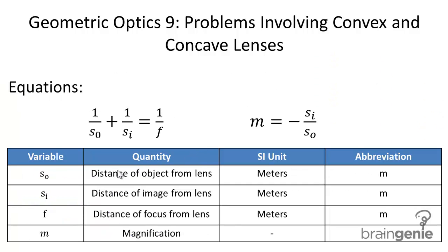Two important equations which are essentially the same equations as the equations for convex and concave mirrors. It's 1 over SO, SO being the distance of the object from the lens, and SI, the distance of an image from the lens, equals 1 over F, and that's the distance of the focus from the lens or the focal length.